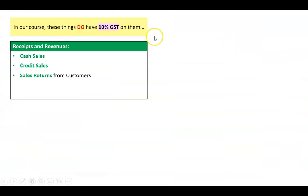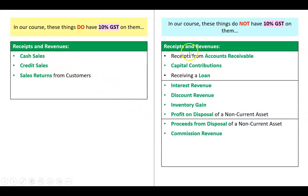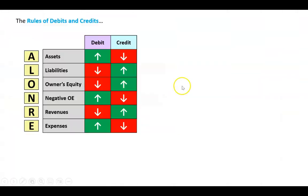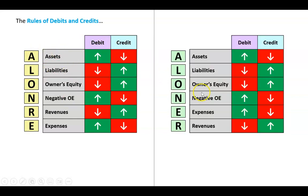In our course, some things do have 10% GST on them with regard to receipts and revenues: they are cash sales, credit sales, and sales returns. We won't deal with sales returns now - we'll cover that in a couple of chapters' time. We only need to worry about GST for cash sales and credit sales. We don't need to worry about GST for receipts from accounts receivable, capital contributions, receiving a loan, and so on. Now let's look at the rules of debits and credits - we know the loan rate, or 'LOANER', and we'll need those rules for assets, liabilities, revenues and expenses.